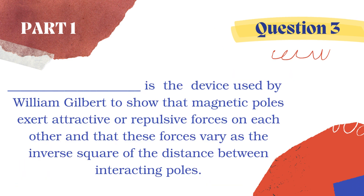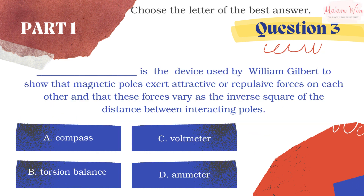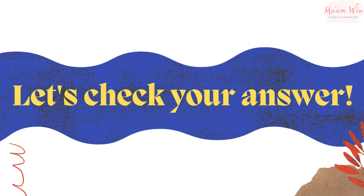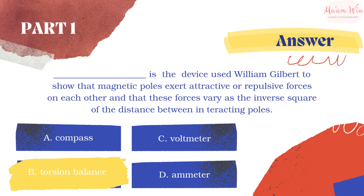Question number three: blank is the device used by William Gilbert to show that magnetic poles exert attractive or repulsive forces on each other, and that this force varies as the inverse square of the distance between interacting poles. Choose the letter of the best answer. Let's check your answer — the right answer is letter B, torsion balance.